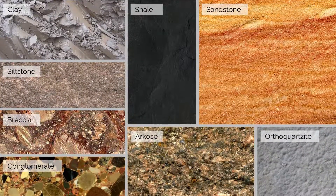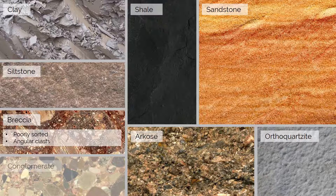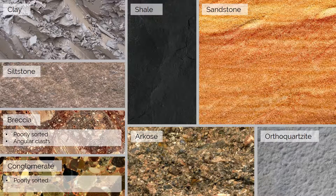Now we know how clastic sedimentary rocks are classified, we can look in more detail at some specific rocks. Breccia and conglomerate are made of mixed clasts with no specific grain size range, although they are poorly sorted. Breccia contains angular, non-rounded clasts, suggesting the clasts were transported in a low-energy environment such as a glacier. A conglomerate has rounded clasts, suggesting higher energy transport, for example a river. Both rocks can include many different rock types, including igneous, metamorphic and older sedimentary rocks.